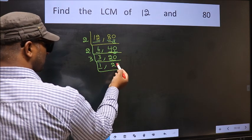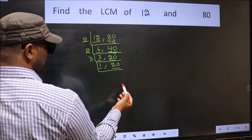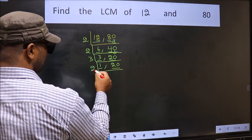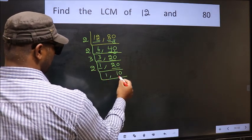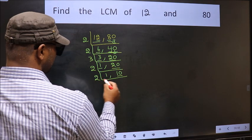Now, we got 1 here. So, focus on the other number 20. 20 is 2 tens, 20. Now, we have 10. 10 is 2 fives, 10.